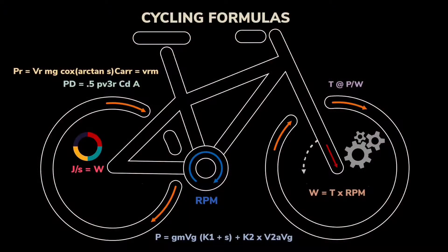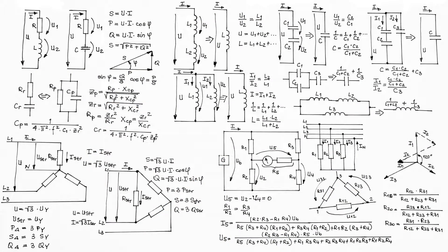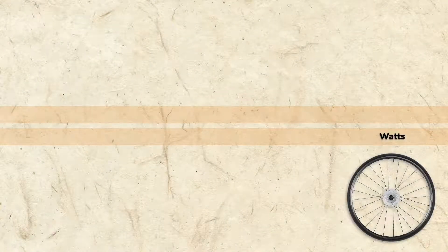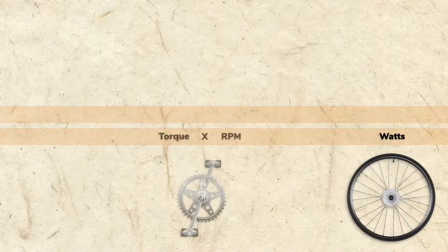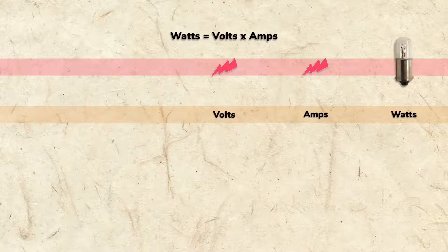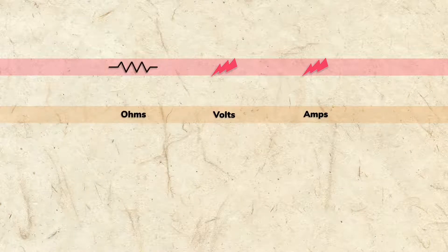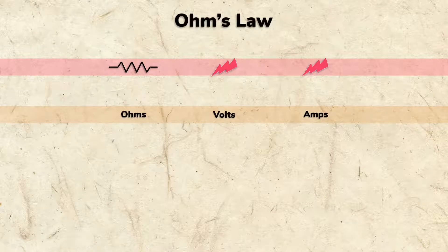Just as math formulas can be used to analyze a bike rider's work, there are formulas to analyze electricity's work. A bike rider's watts, for example, equals torque times RPM. Electrical watts equals volts times amps. To calculate ohms, volts, and amps, we use Ohm's law.